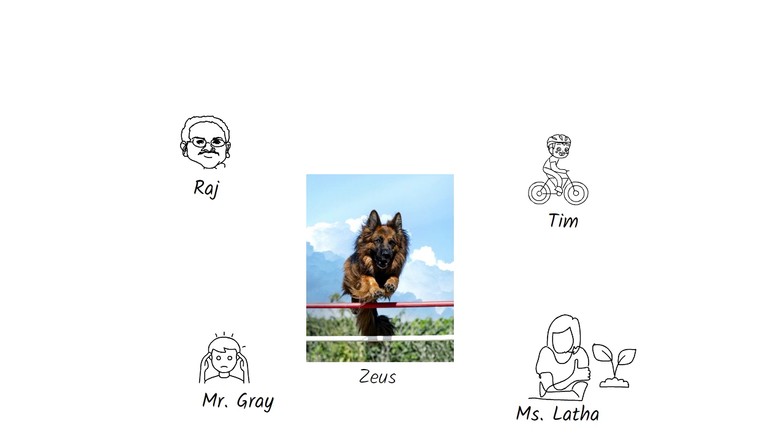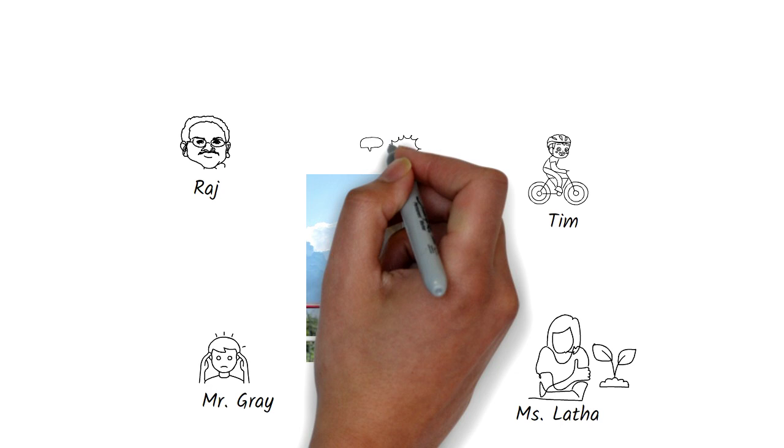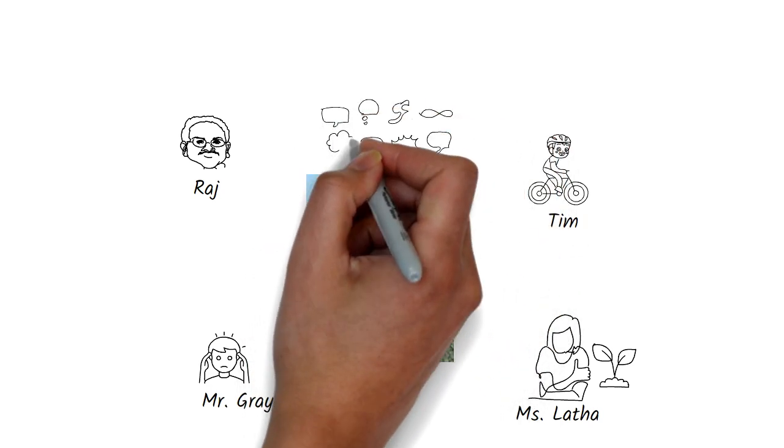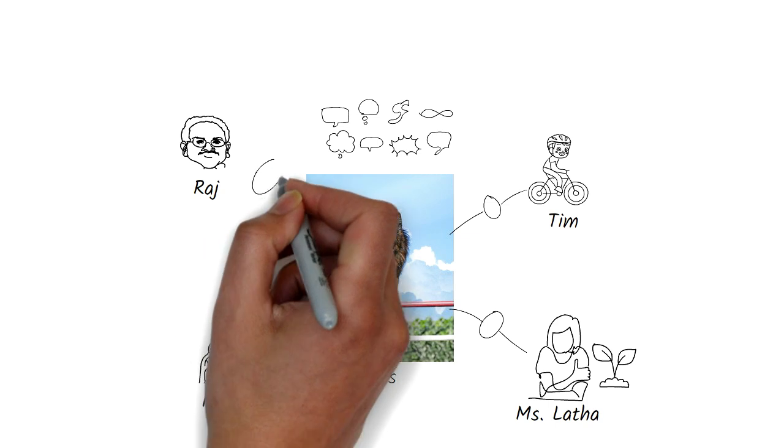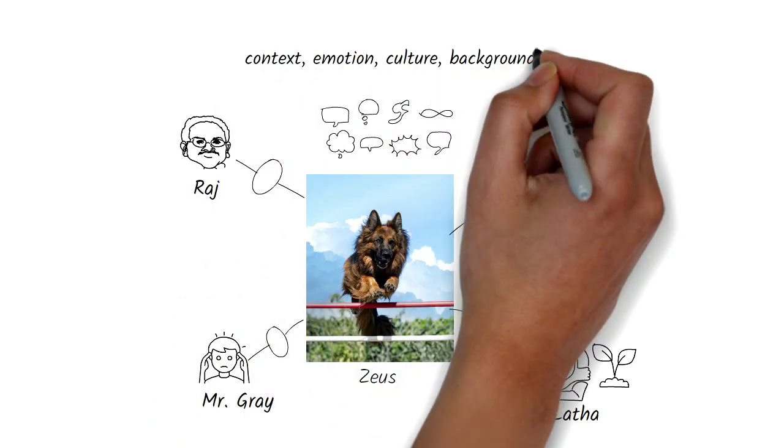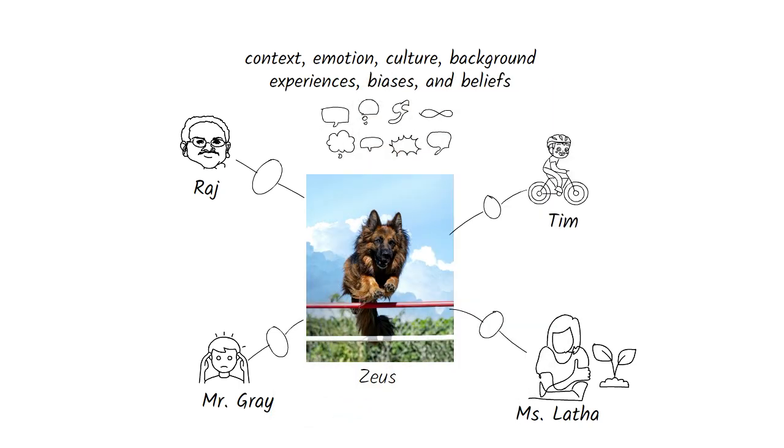Names have been changed to protect identities. This scenario illustrates the Rashomon Effect, that is, how different people can interpret a single event in multiple equally valid ways. Each of these narratives is colored through the individual's lens of context, emotions, culture, background, experiences, biases, and beliefs.